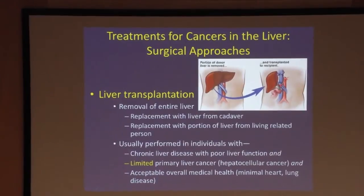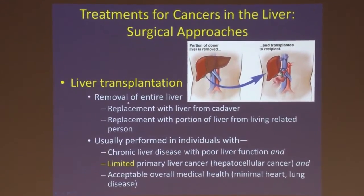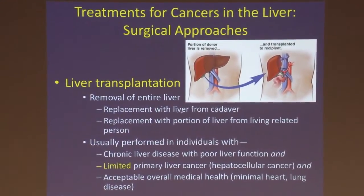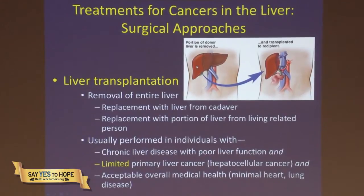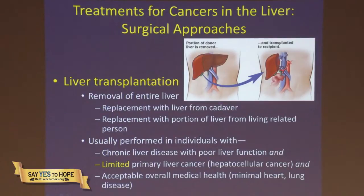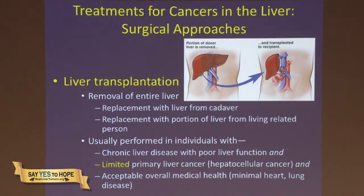The surgical approaches to cancers of the liver include liver transplantation — removal of the entire liver and replacement with a liver from a cadaver, or replacement with a portion of a liver from a living related donor. The donor has part of their liver removed in a major abdominal operation, and that portion is implanted into the recipient after their diseased liver with tumor is removed. This is usually performed in individuals with chronic liver disease, poor liver function, limited primary hepatocellular cancer, and acceptable overall medical health with minimal heart and lung disease.